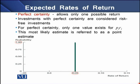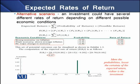In the figure, you can see that at the 5% rate of return we have a probability of 1, meaning we are 100% sure that this particular investment will earn a rate of return of 5%. In an alternative scenario, an investment could have several different rates of return depending on different possible economic conditions.